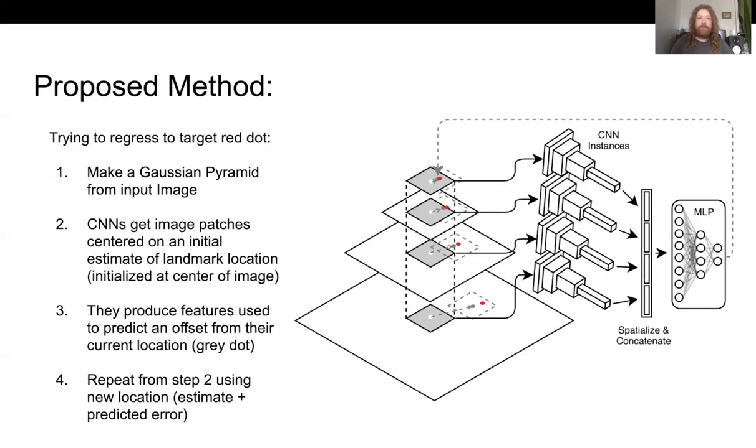Here's the proposed method. Our goal is to figure out where that ground truth red dot is in the figure. We're going to make a Gaussian pyramid for the image and take a column from the pyramid centered on our initialization, the center of the image. The CNN will process all these different levels. At the top level, the lowest resolution, the red dot's inside it, so we probably can know where the landmark is. By the highest resolution, it's actually not in view, so that level probably won't contribute much.